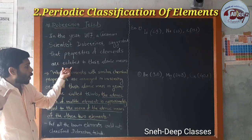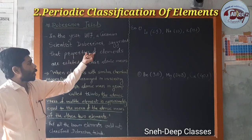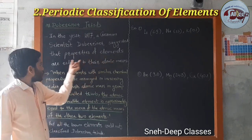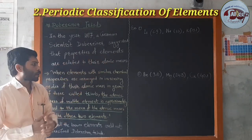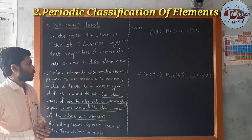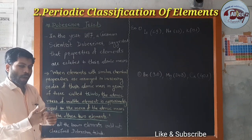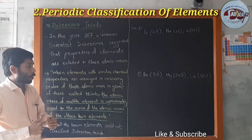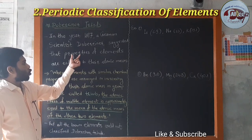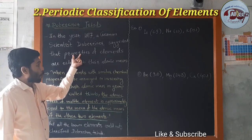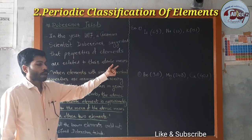Students, please give attention for these lines. Properties of elements are related to their atomic masses — not their atomic number, but their atomic masses. Dobereiner suggested that properties of the elements are related to their atomic masses.